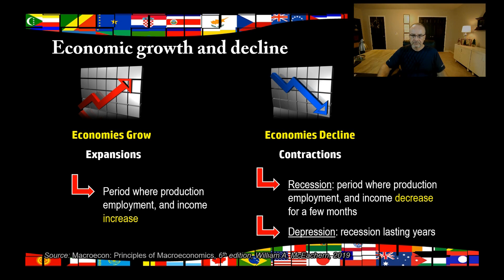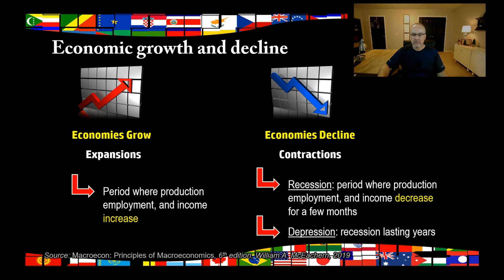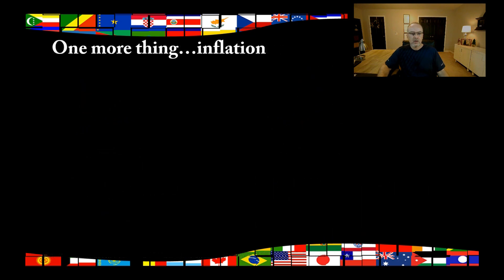There's also something called a depression. A depression is when a recession just keeps going and going. Economists differ on how long you must be in a recession before it becomes a depression, but most will agree that we've only had one in the United States — in the 1930s, what we call the Great Depression. That doesn't mean we cannot enter another period of prolonged recession, but so far we have not had but one.